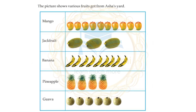The picture shows various fruits collected from Asha's yard. The fruits include mango, jackfruit, banana, pineapple, and guava.